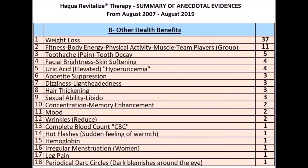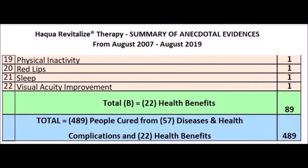14. Hot flashes or sudden feeling of warmth: 1 person. 15. Hemoglobin: 1 person. 16. Irregular menstruation for women: 1 person. 17. Leg pain: 1 person. 18. Periodical dark circles or dark blemishes around the eye: 1 person. 19. Physical inactivity: 1 person. 20. Red lips: 1 person. 21. Sleep improvement: 1 person. 22. Visual acuity improvement: 1 person. Total: 22 health benefits, 89 people.